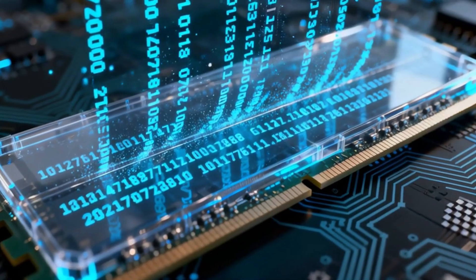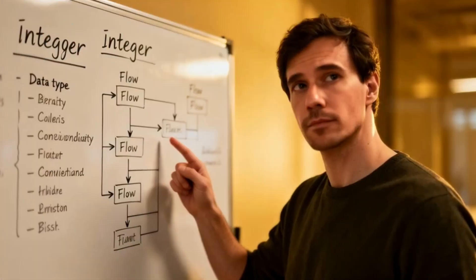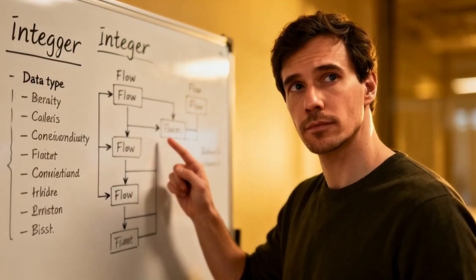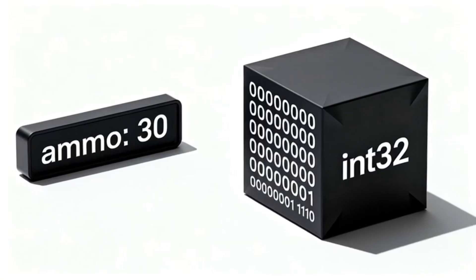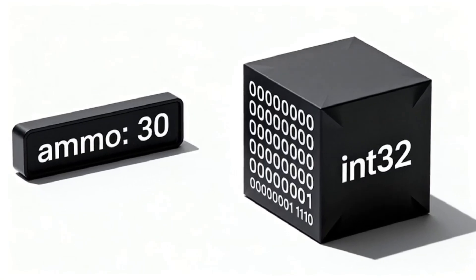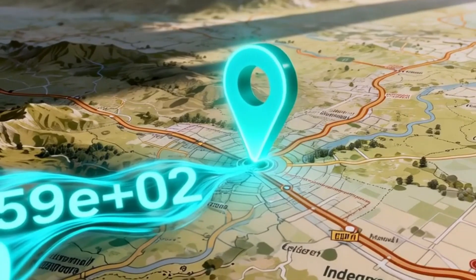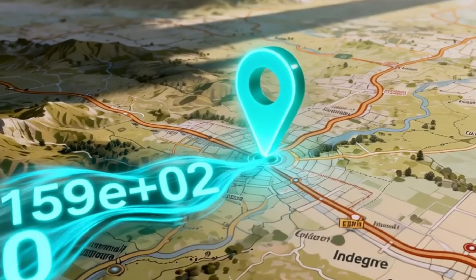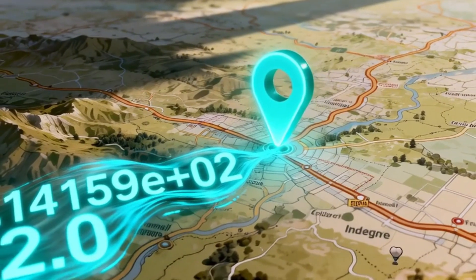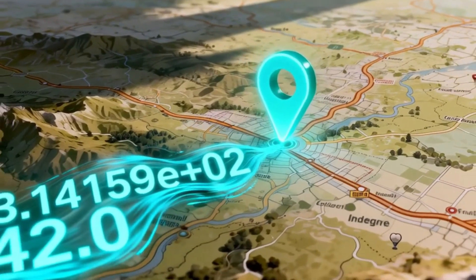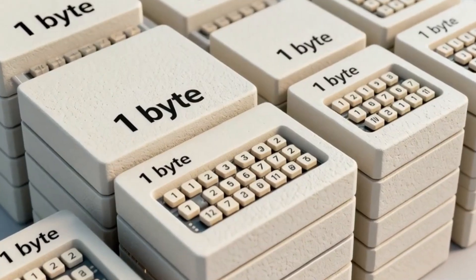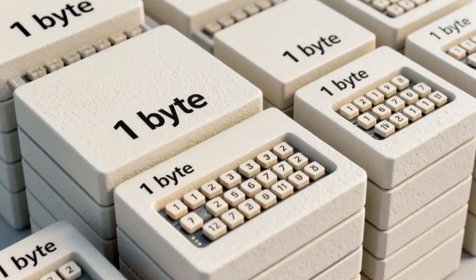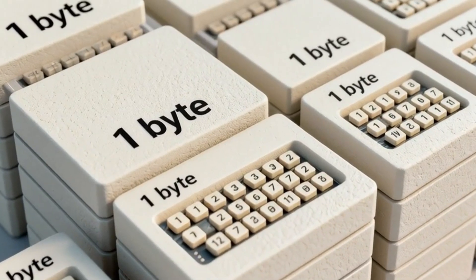It's all stored as numbers in memory. Game developers use standard conventions. A whole number, like your ammo count of 30, is stored as an integer. A number with a decimal, like your character's precise location on a map, is stored as a floating point number. These values have a specific size in memory, usually measured in bytes.